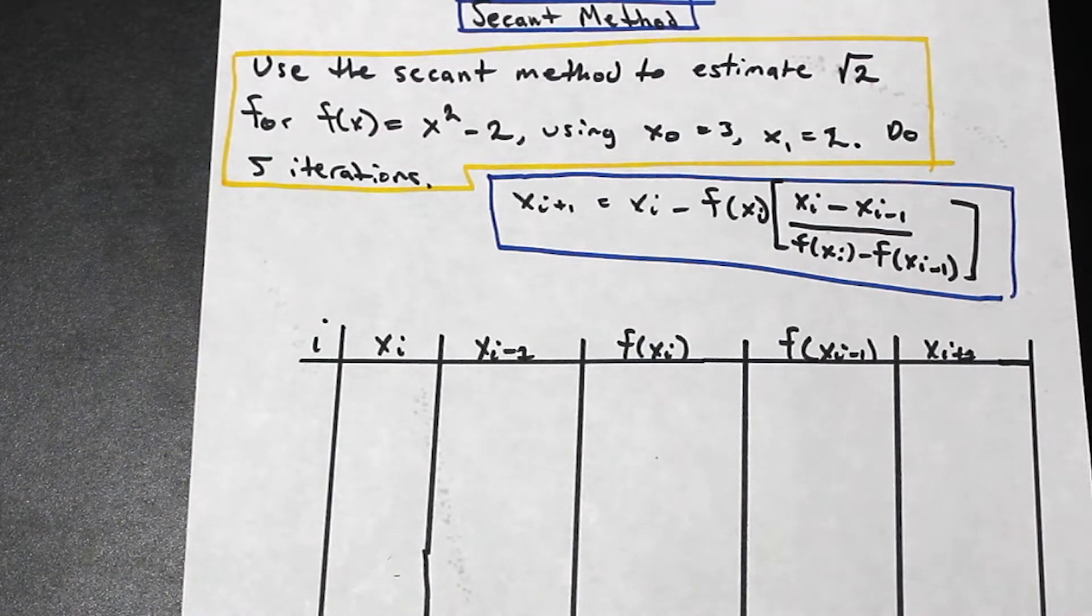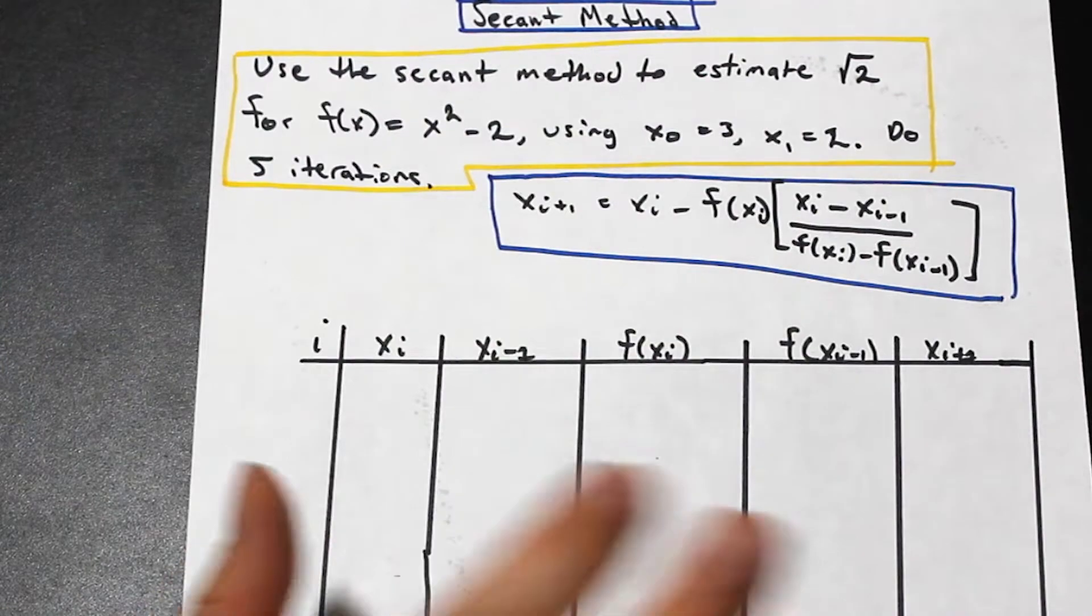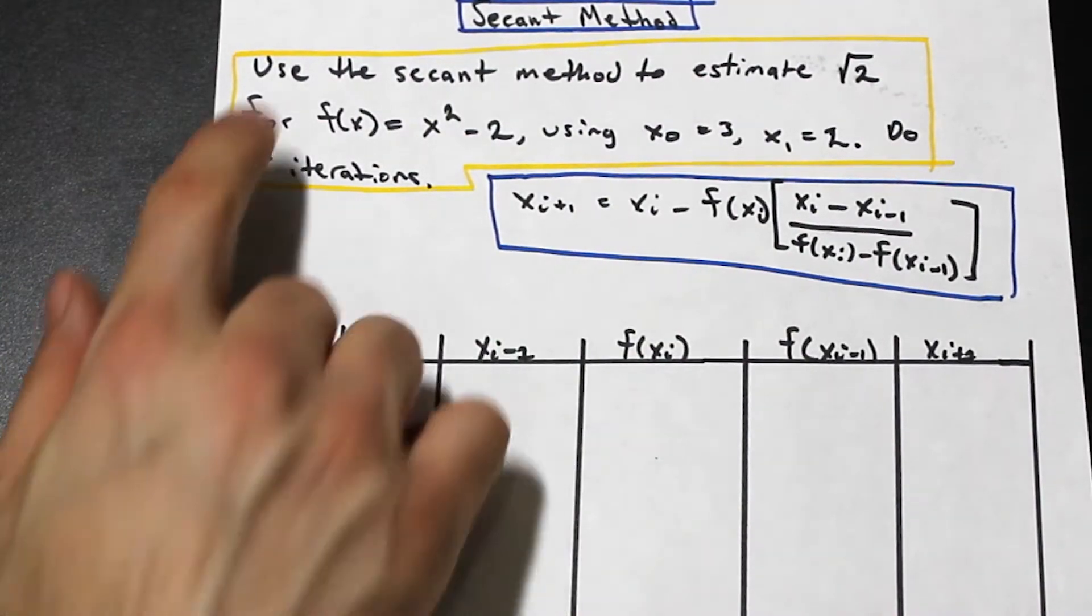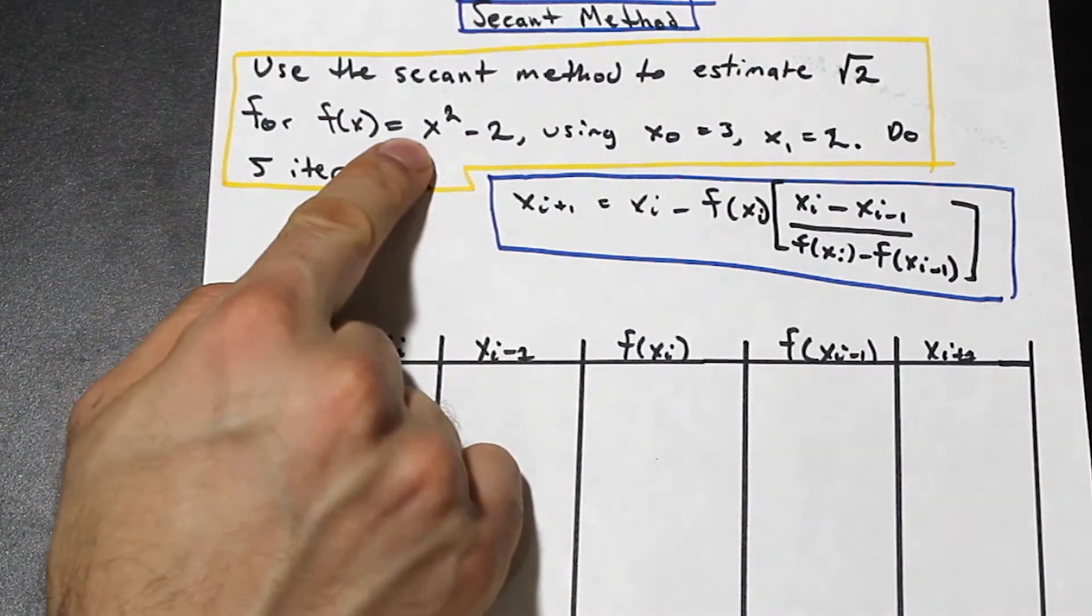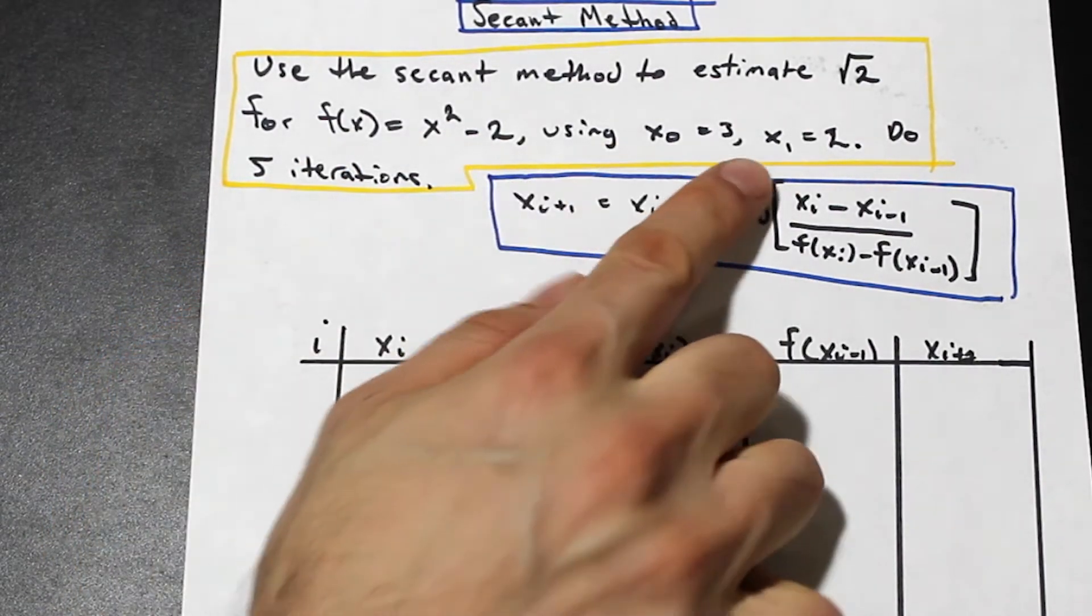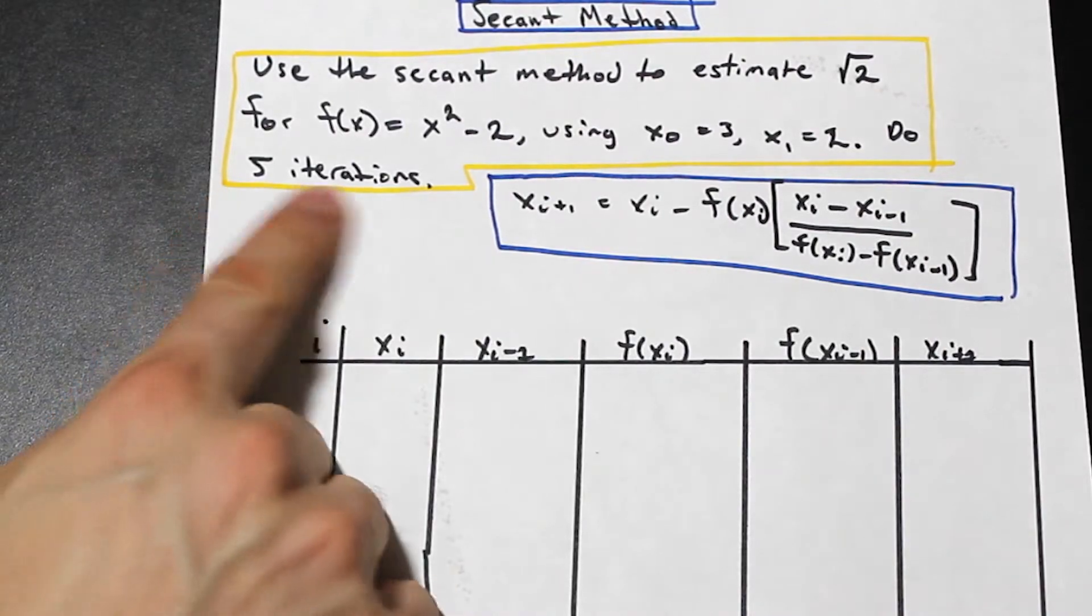But usually in this course, you're not asked to explain the method or derive anything. You're just asked to solve the problem, and this will be good enough. So we're asked to use the secant method to estimate root 2 for f(x) = x² - 2, using x₀ = 3 and x₁ = 2, and do 5 iterations.